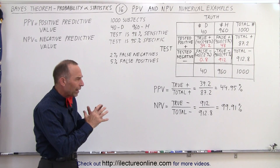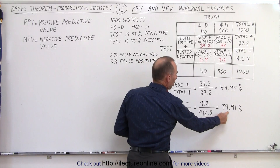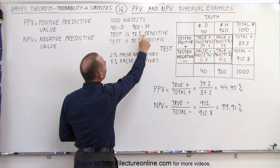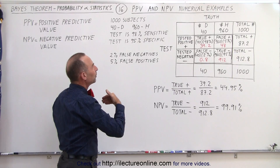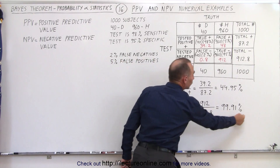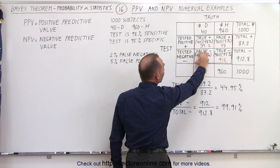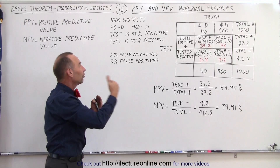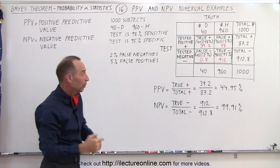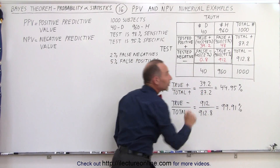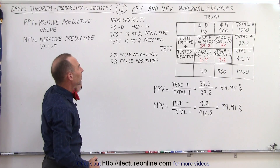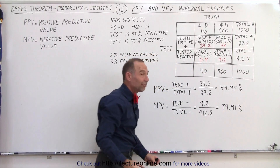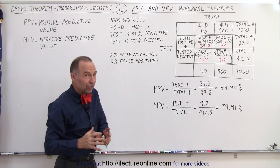Now let's understand why the numbers are what they are. The negative predicted value would be smaller if there were more false negatives. If the sensitivity of the test drops, more people will test negative even though they're actually positive, and this number will go down — which is a bad thing. You want false negatives to be as small as possible, and that is accomplished by having very high sensitivity. The closer sensitivity is to 100%, the closer the negative predicted value will be to 100%.